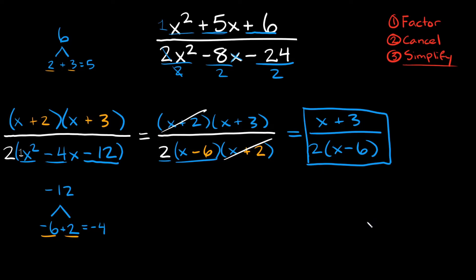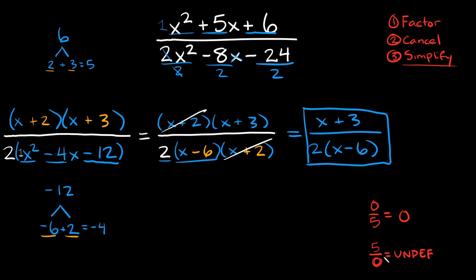Now the last thing we have to talk about is dividing by 0. In a simple fraction like 0 divided by 5, the answer is just 0 — 0 can be in the top of a fraction. But if you flip it to 5 divided by 0, this is the math equivalent of taking a dump on the sidewalk. It is illegal. You cannot divide by 0 because you get something called undefined. You never want the bottom part of your fraction to equal 0, whether it's a simple problem or something more complicated.